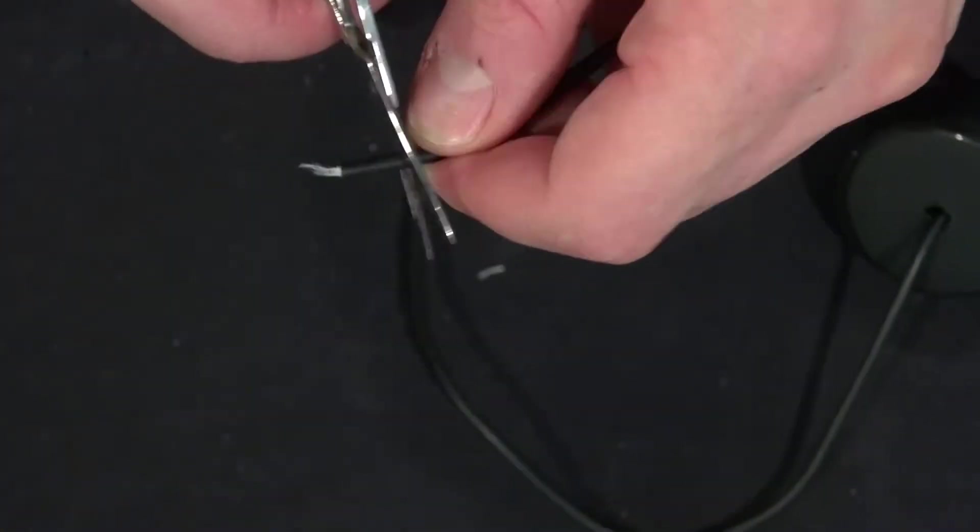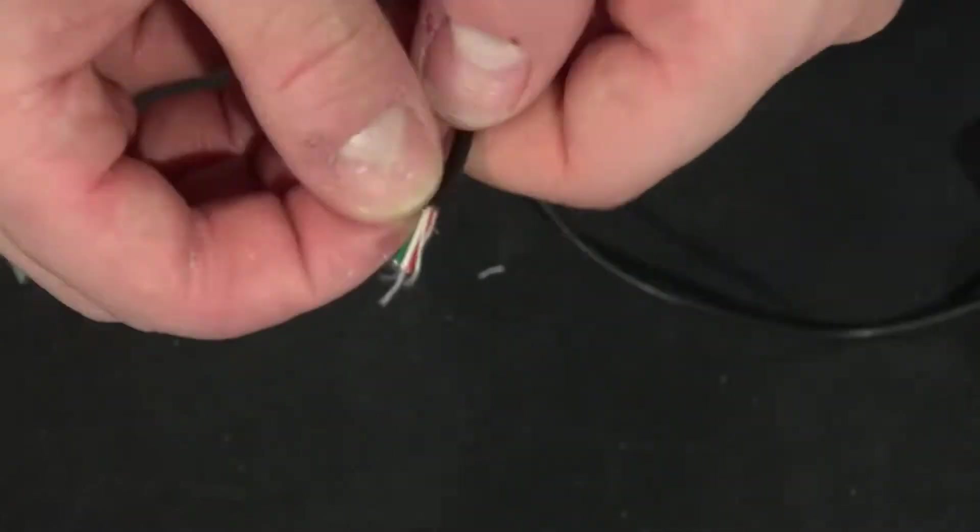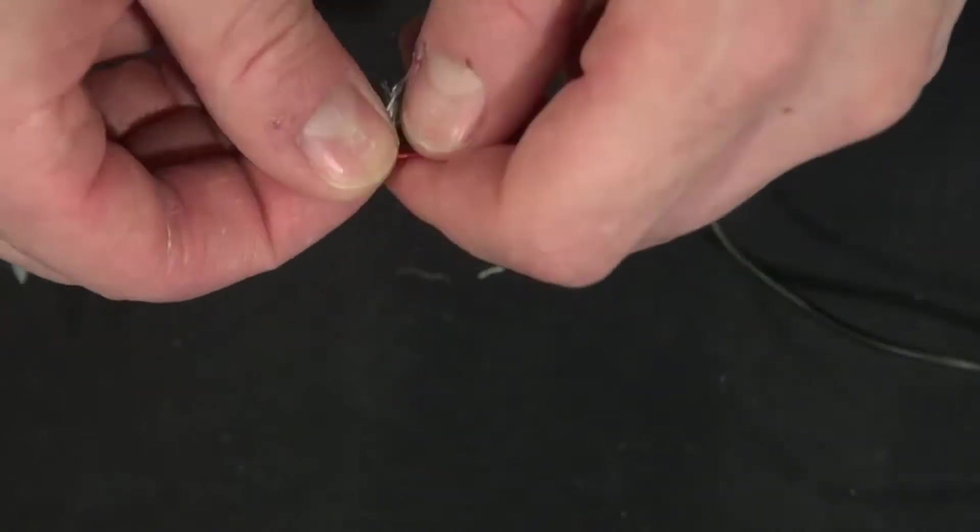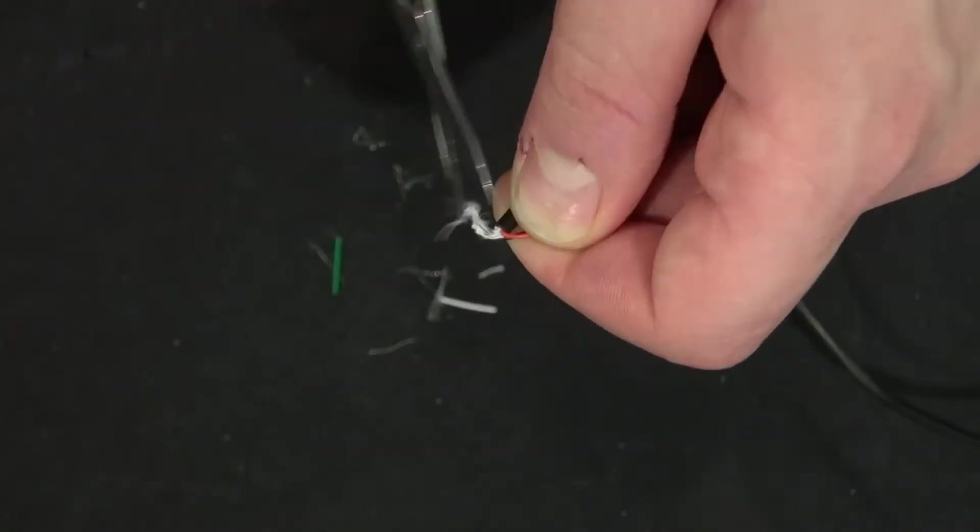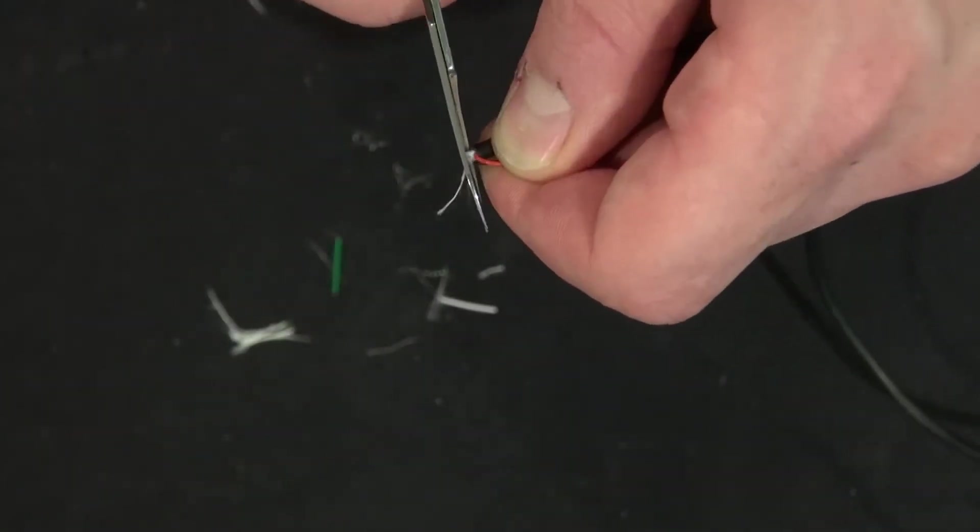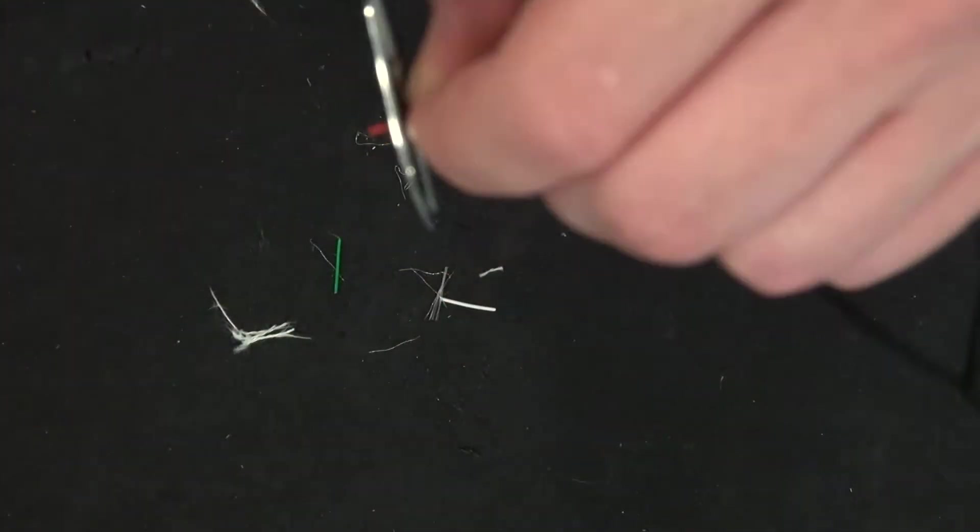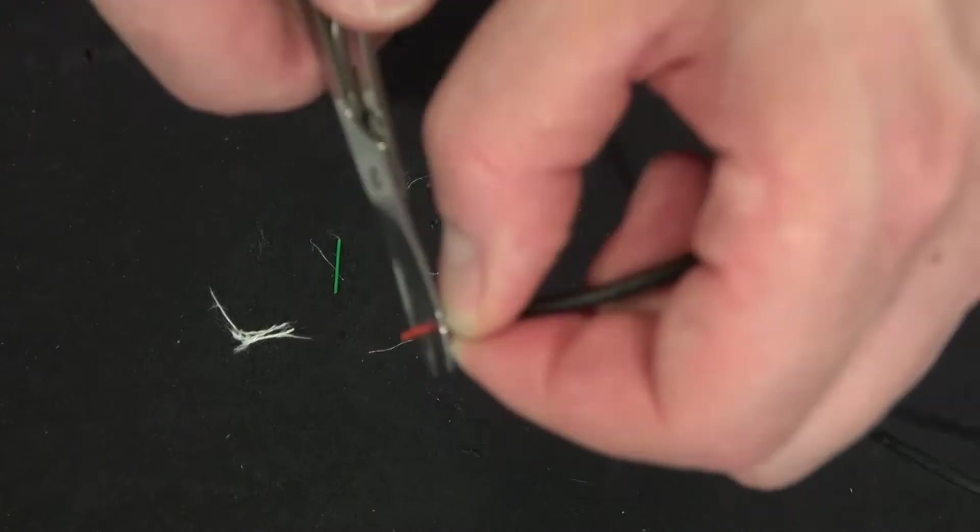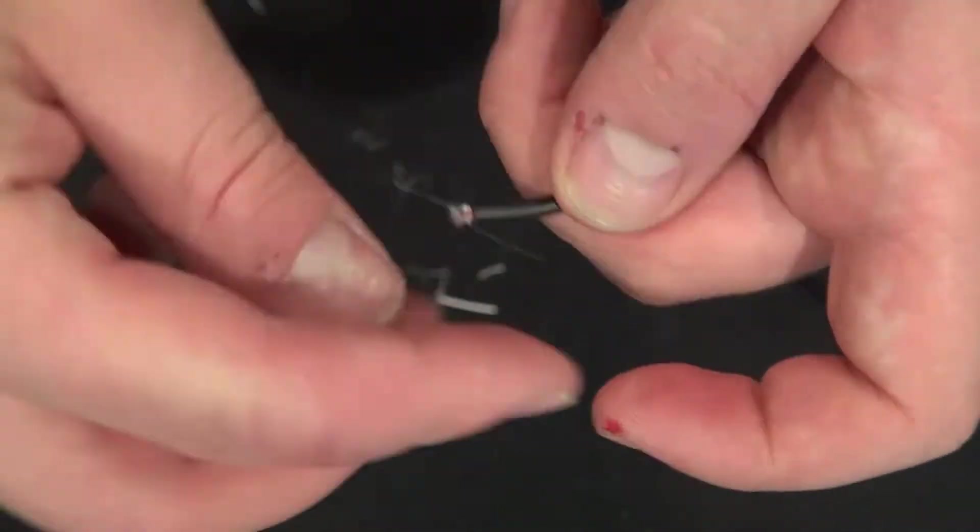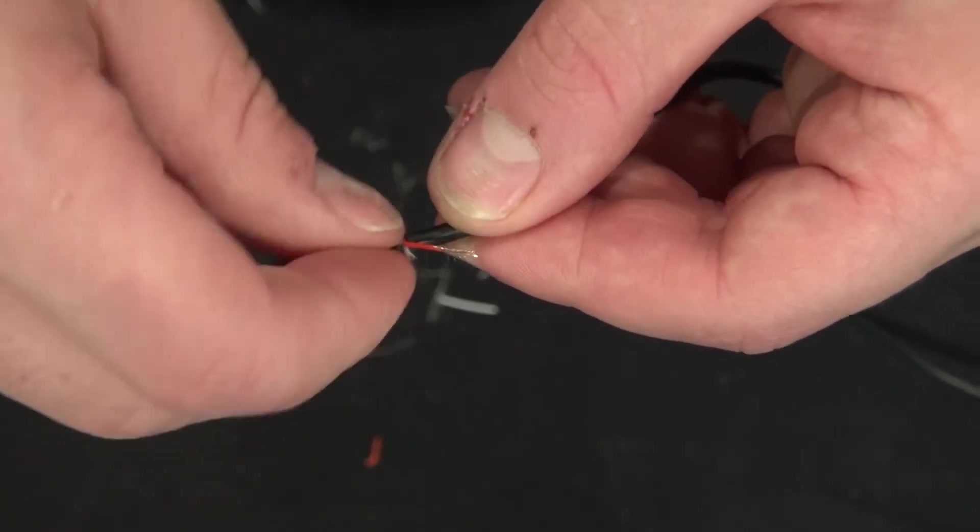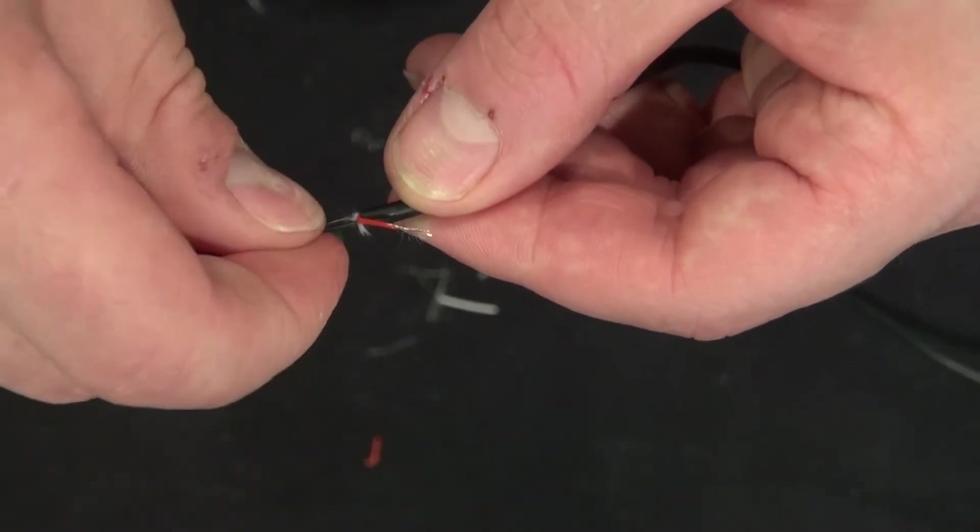Now I'm going to go and remove the insulation and cut off all the wires except for the red and black because red is positive, black is negative. And I'm going to remove the insulation of those two wires and then twist the wires.